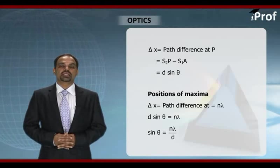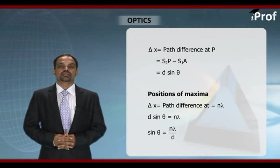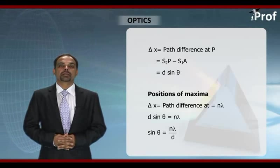Having calculated the path difference between the waves coming from S1 and S2, that is the two slits at general point P, now we can find the position of maxima.